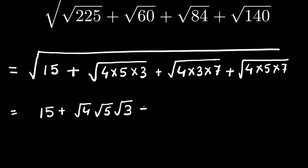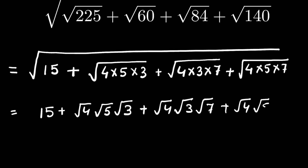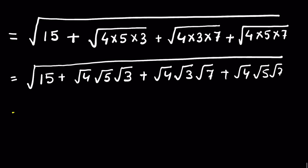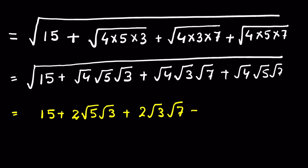Now we have: 15 + √4 · √5 · √3 + √4 · √3 · √7 + √4 · √5 · √7. Since √4 = 2, this becomes: 15 + 2√5 · √3 + 2√3 · √7 + 2√5 · √7 under the square root.